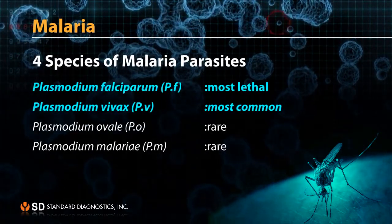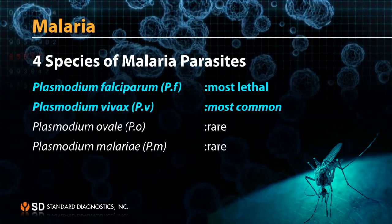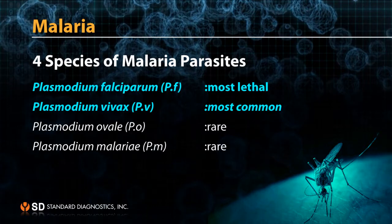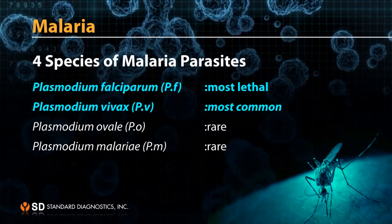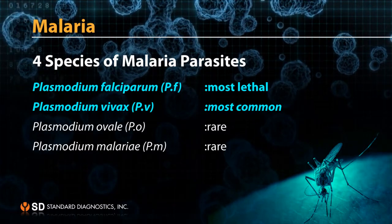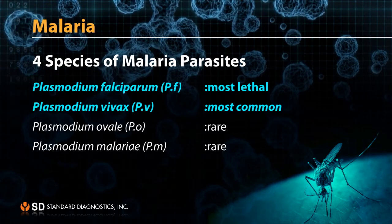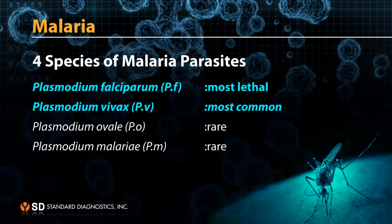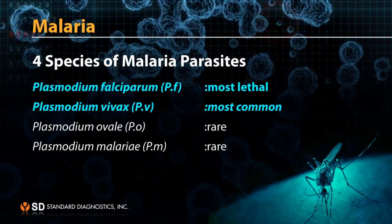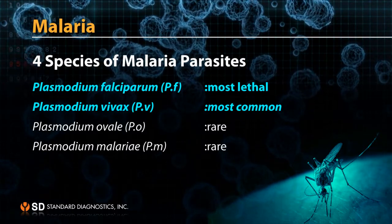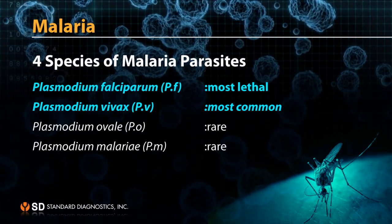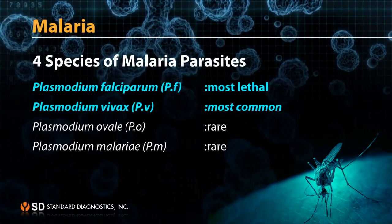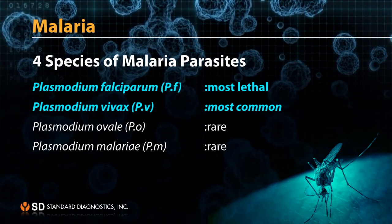Among the genus Plasmodium, four species have been identified as capable of infecting humans. Plasmodium falciparum causes the most severe morbidity and mortality and is found mostly in the tropics. Malaria also caused by Plasmodium vivax, Plasmodium ovale, and Plasmodium malariae develops milder symptoms in humans and is not generally fatal.